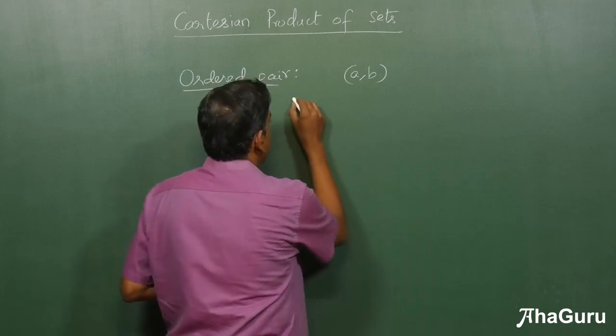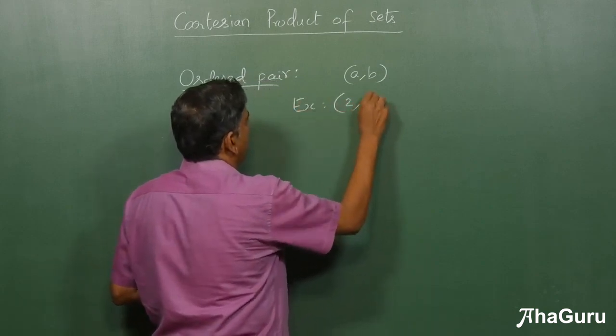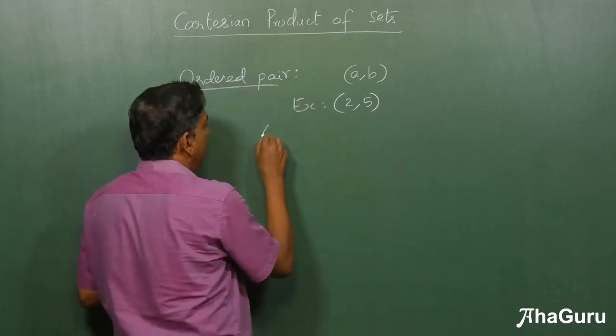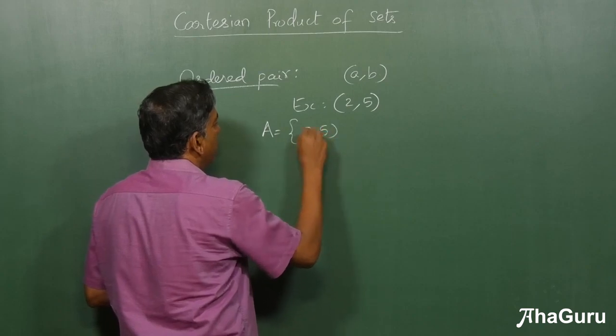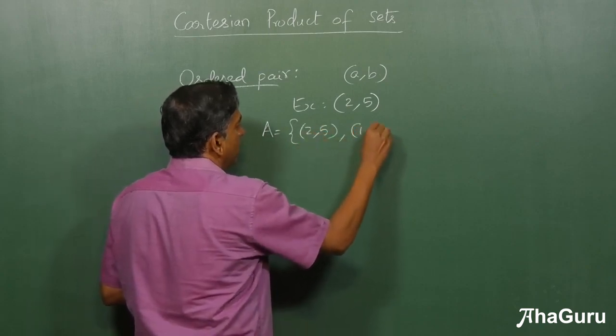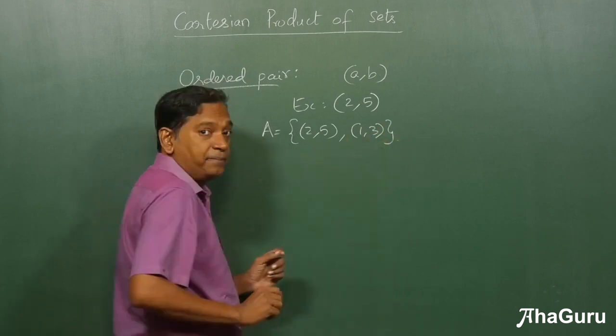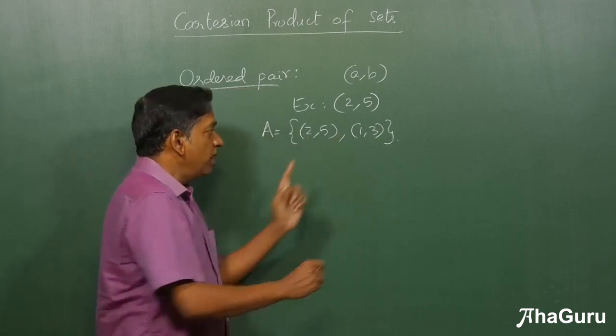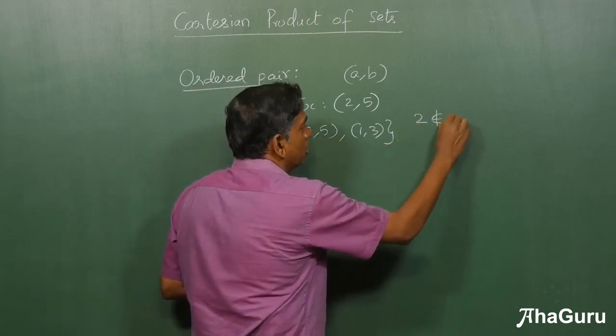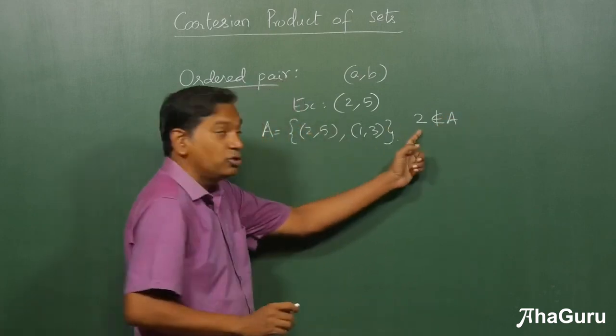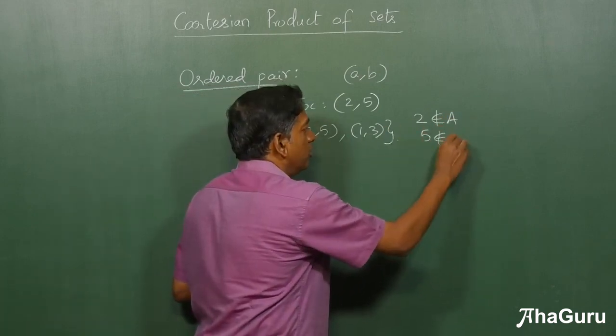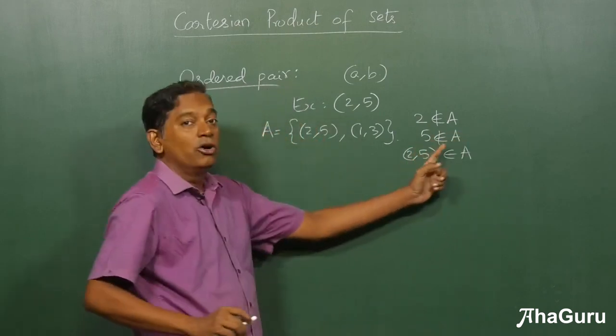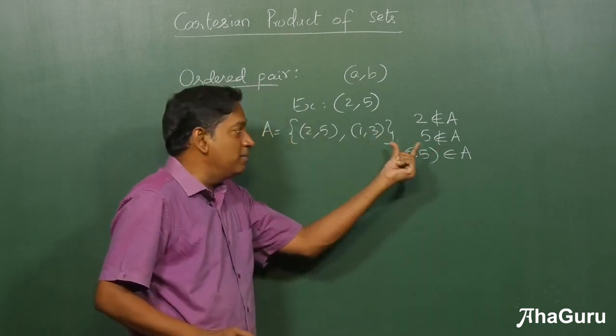For example, if I say 2,5 is an ordered pair, and let's say a set A has 2,5 as an element and 1,3 as an element. This is a new kind of element because 2 and 5 don't belong to A. So 2 does not belong to A, 5 also does not belong to A. But this new element (2,5) belongs to A. Similarly, (1,3) as an element belongs to A.